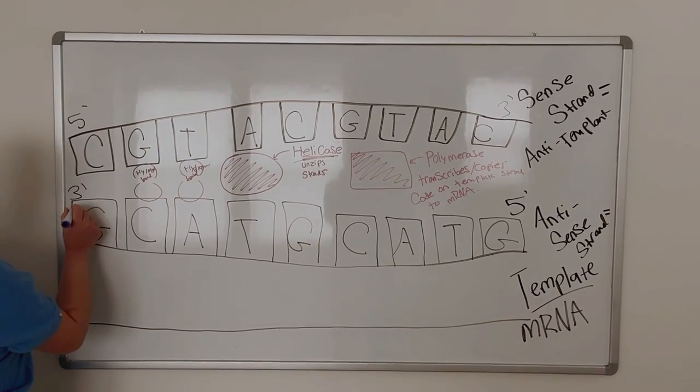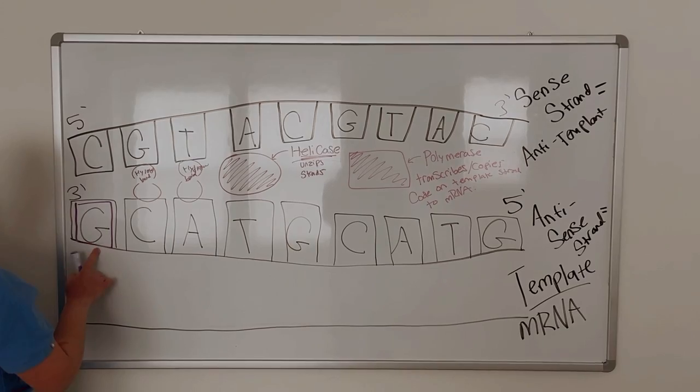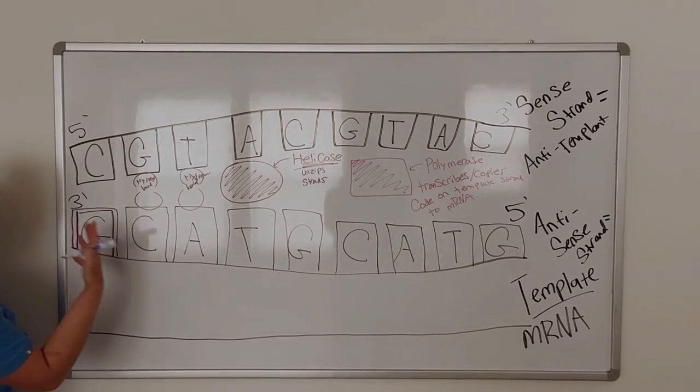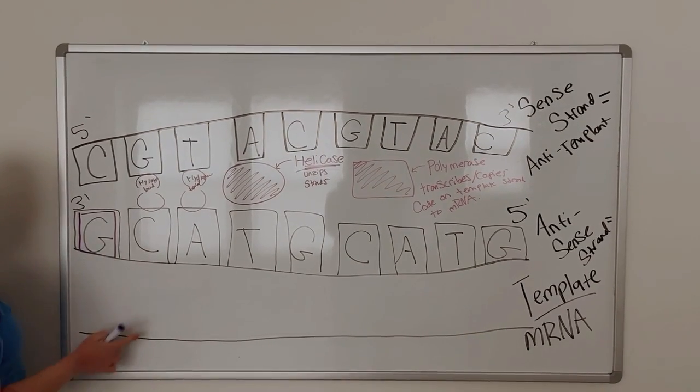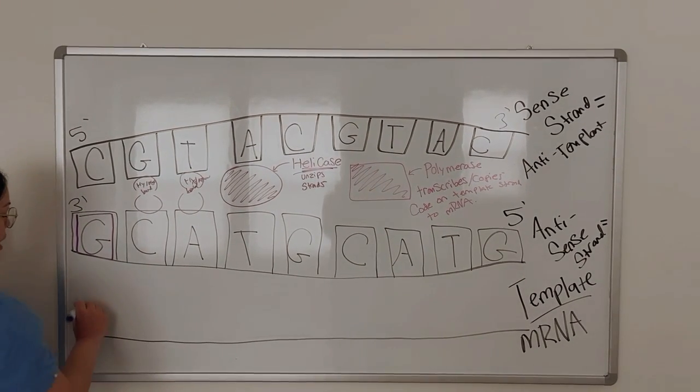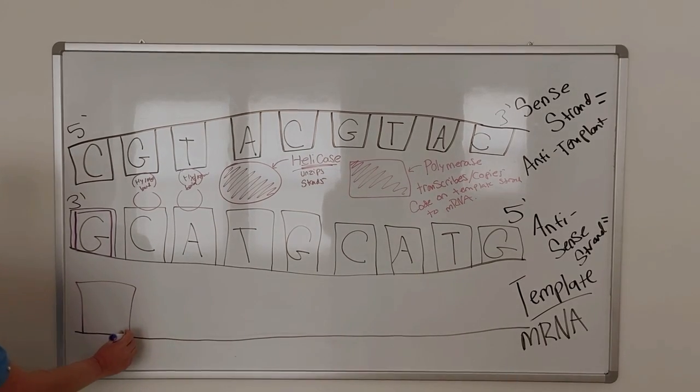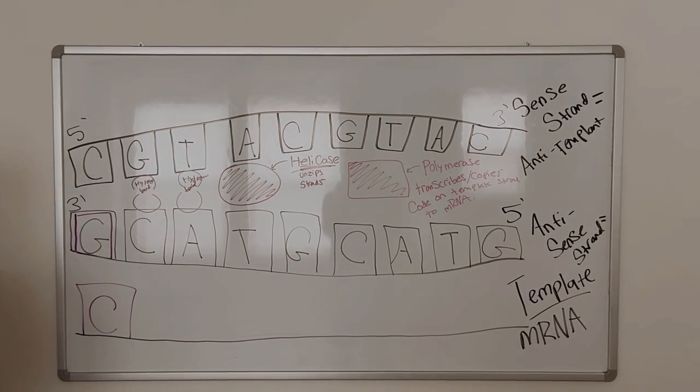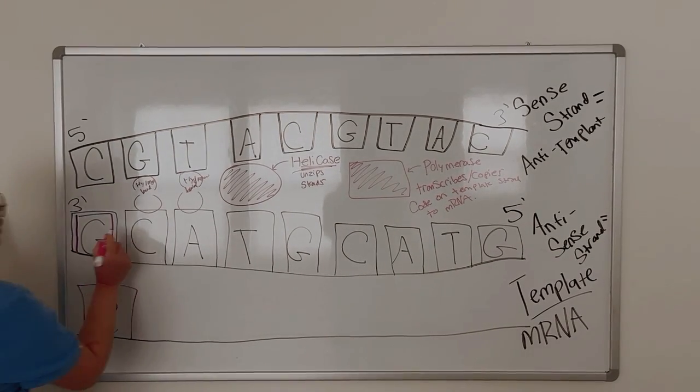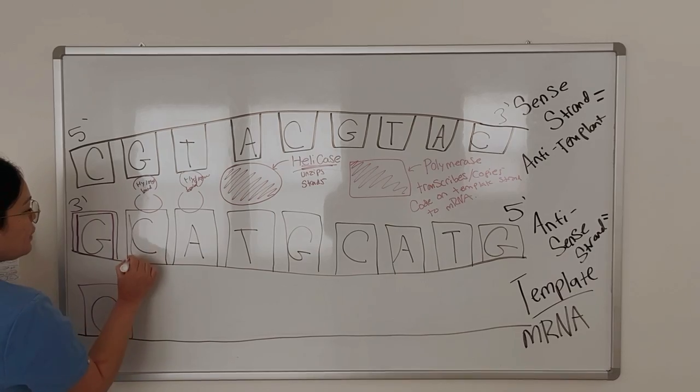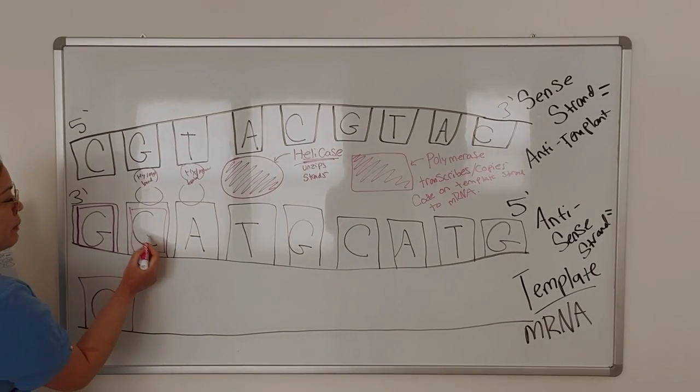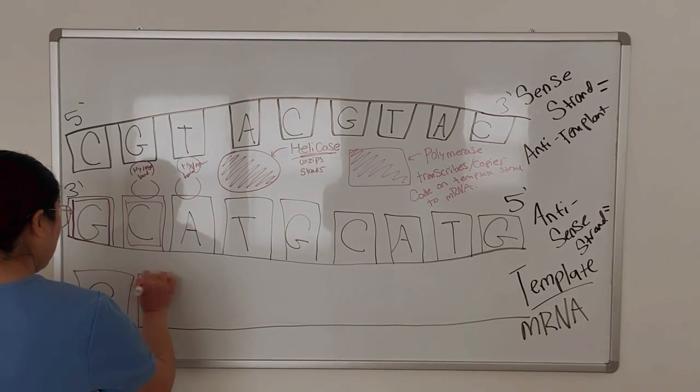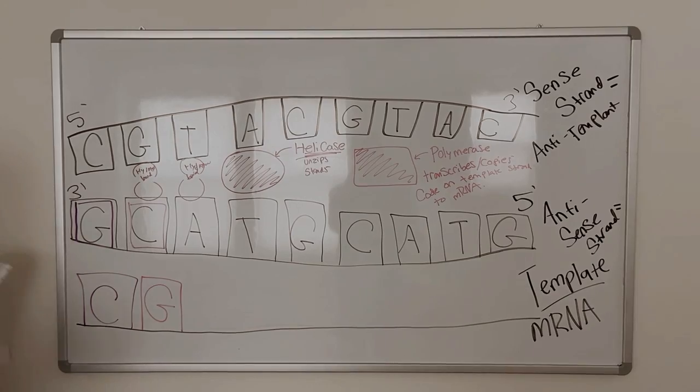Our RNA polymerase is going to look at this first base right here. This is guanine, and it's going to ask itself what base pairs with guanine in RNA, and it's going to make that base. So cytosine pairs with guanine. Next, it's going to look at the next base. So next, we have cytosine. What base pairs with cytosine in RNA? Guanine, right?